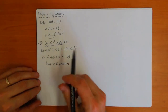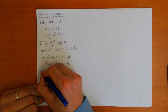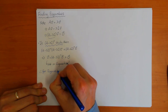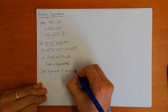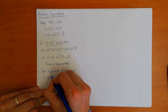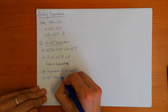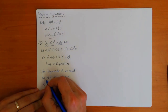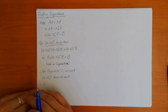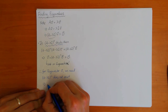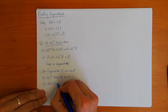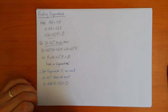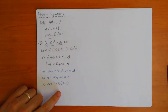Therefore, for the eigenvector V, we need the fact that A minus lambda I inverse does not exist, because otherwise you get zero. But when does the inverse not exist? We showed last week that you can always find the inverse as long as the determinant is not zero. So the only time the inverse does not exist is if the determinant is zero. So in order to have an eigenvector, the determinant of A minus lambda times I must be equal to zero.